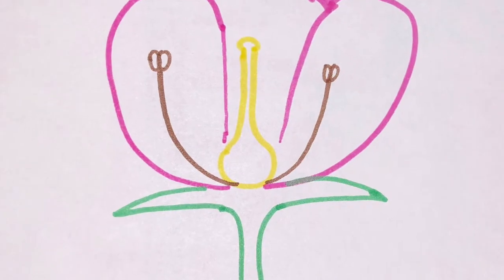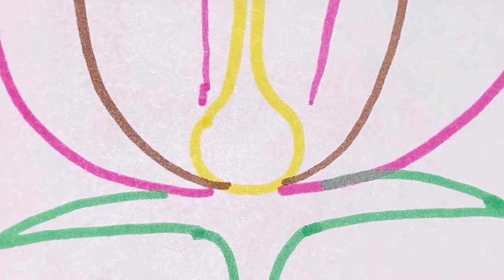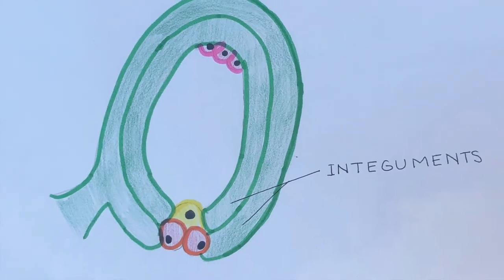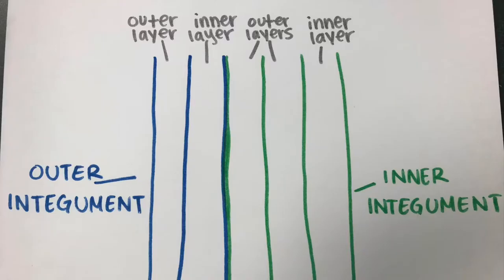Now that seed coat development can occur, let's take a closer look inside the ovule of the flower to see what's going on. The seed coat develops from the two integuments of the ovule — the outer and the inner. The outer integument consists of two cell layers, while the inner integument consists of three cell layers.